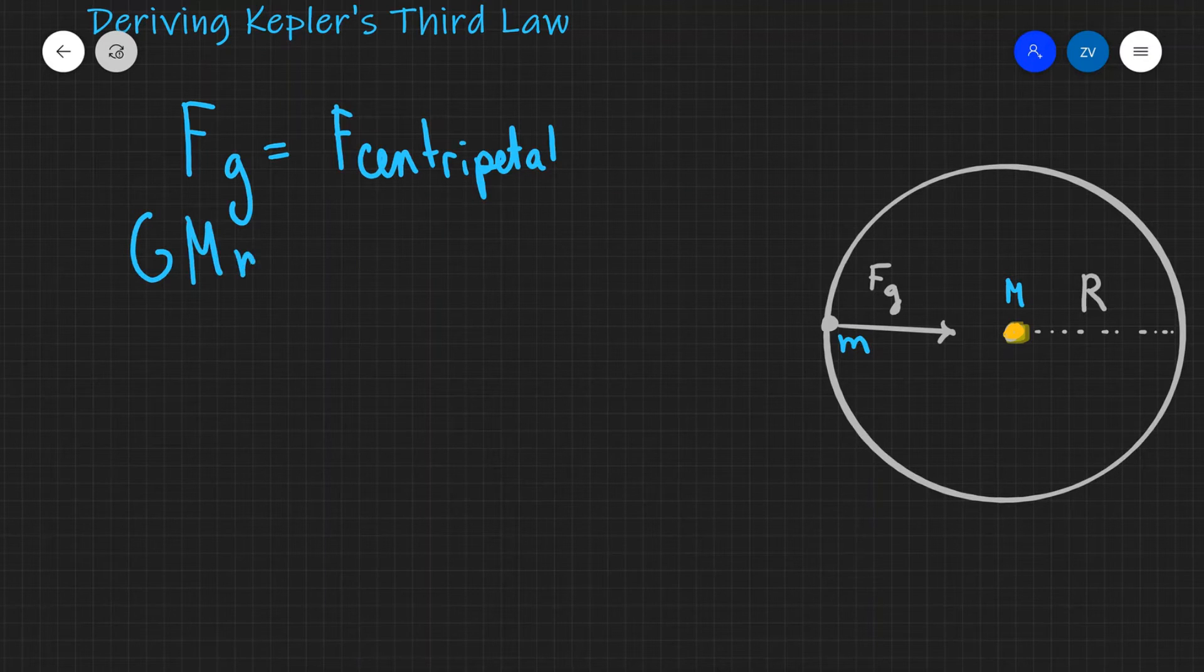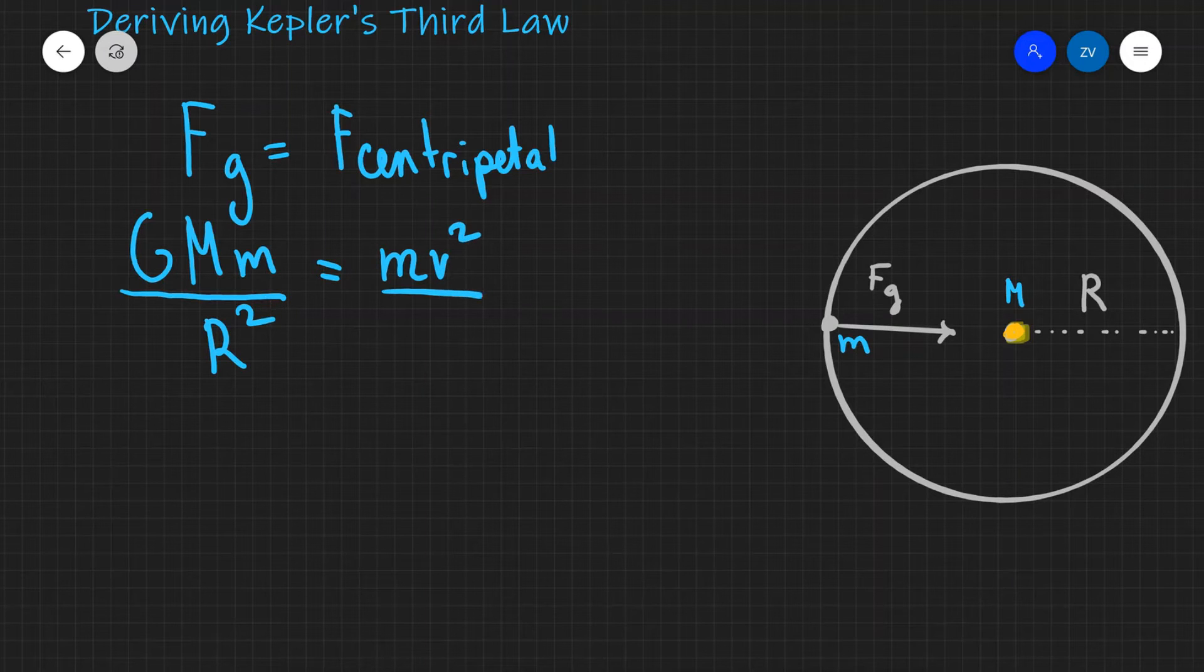Okay well the gravitational force we know that the magnitude of that force is going to be GMm divided by r squared, where M is the mass of the sun, lowercase m is the mass of the planet, and r squared will be the average radius of its orbit. And from centripetal motion we know as well that this is going to be equal to mv squared divided by r.